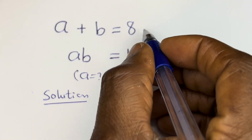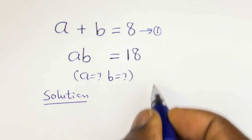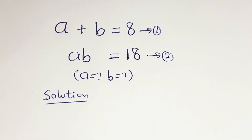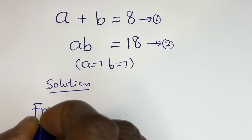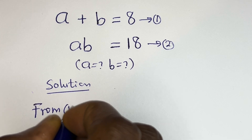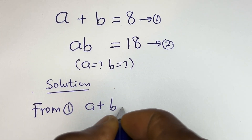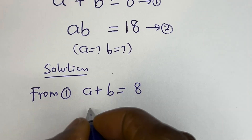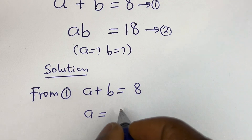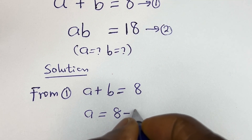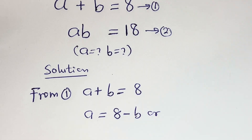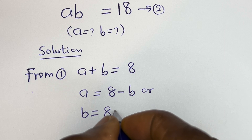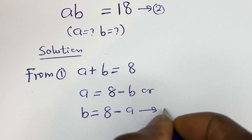We have a plus b is equal to 8 — let's call this equation 1. Then ab is equal to 18 — let's call this equation 2. From equation 1, a plus b is equal to 8, so b is equal to 8 minus a. Let's call this equation 3.